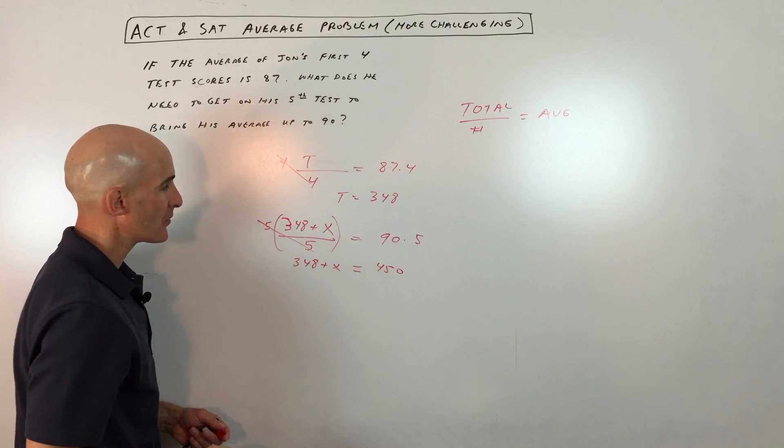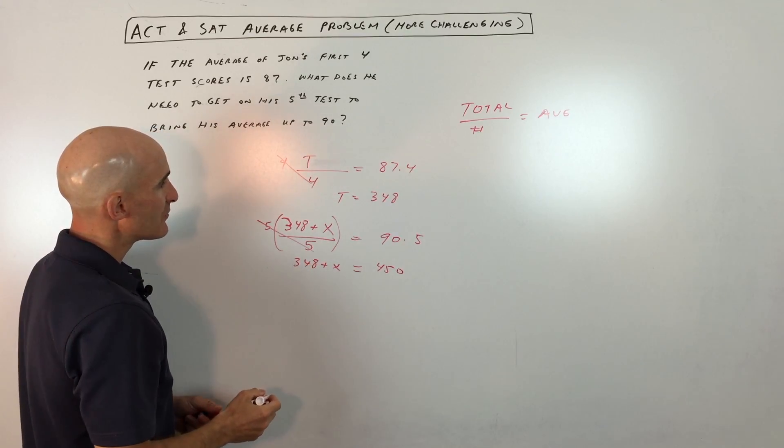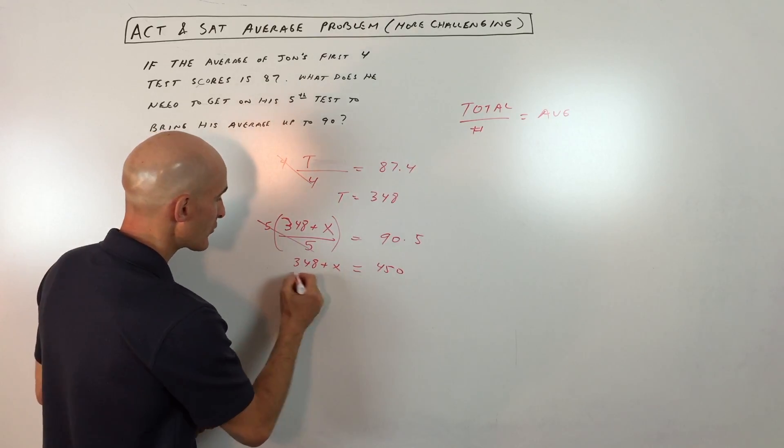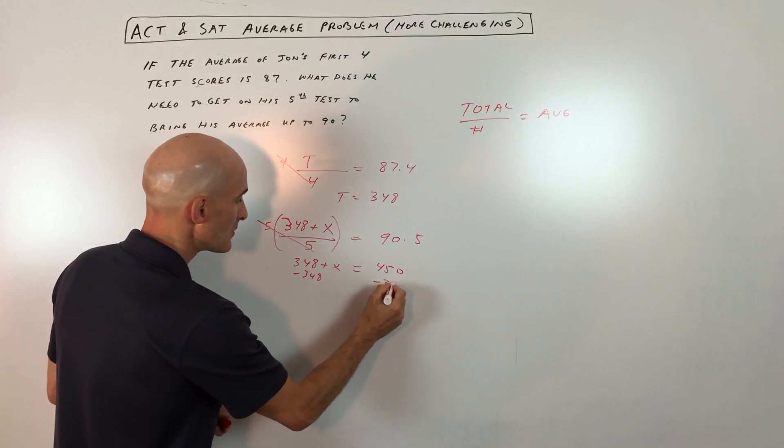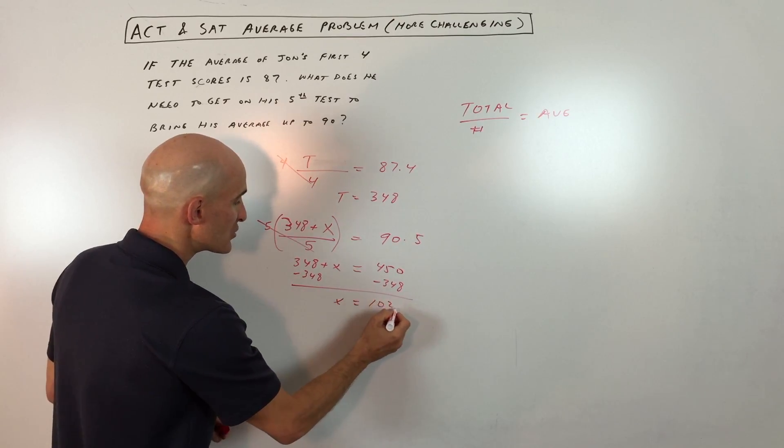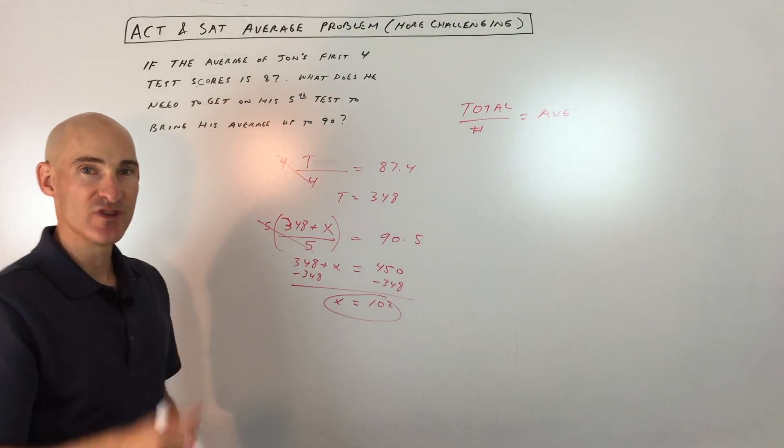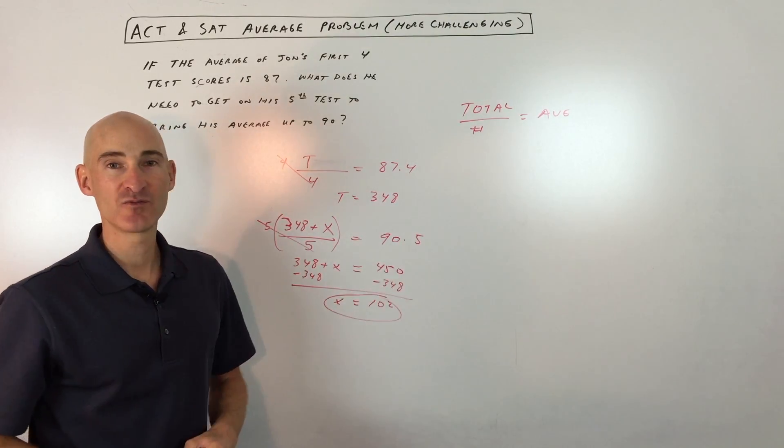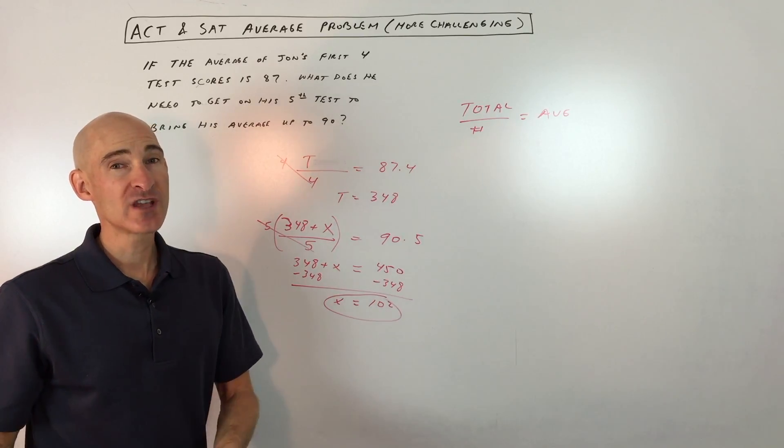This is 348 plus X. Now if we simplify, we subtract 348 from both sides, so X equals 102. He's going to have to get extra credit to boost that overall score up to 90 percent, which is what he wants.